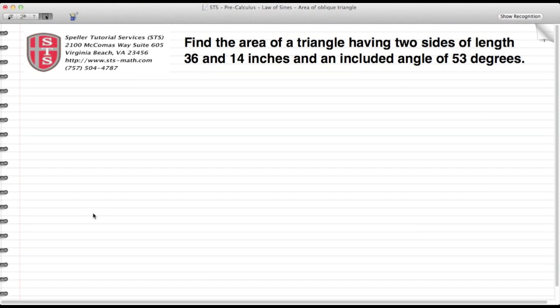Welcome back to Spell Tutorial Services. Today we're going to continue with the Law of Sines, and in this case we're talking about finding the area of an oblique triangle. An oblique triangle is a triangle that does not have a 90-degree angle.